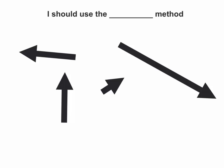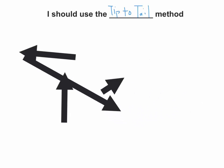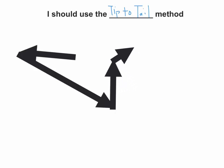If you wrote tip to tail, you win. So once again, when adding these four vectors tip to tail, any order that you pick is fine, as long as you make sure the tip of every single vector is touching the tail of the next vector.